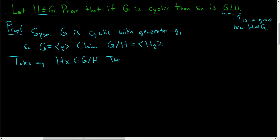Then x is an element of G, so there exists some integer m such that x = g^m. We should be able to write Hx as a power of Hg. Let's try it. Hx = Hg^m.